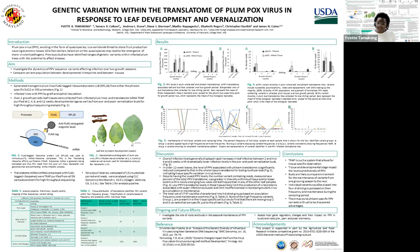Plums, peaches, nectarines, apricots, cherries, almonds — these are premier species of stone fruit. The disease is marked by symptoms such as misshapen and discolored fruit, which the average shopper would eschew. Not to mention that here in the U.S., if an infected tree is found, all trees within a 50-meter radius must be bulldozed and incinerated.